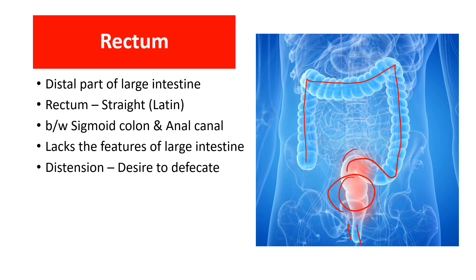The term rectum is derived from the Latin word meaning straight. In animals, the rectum is a straight tubular structure, so they named it as straight. But in humans, it is not a straight tube — it is a kind of curved tubular structure.